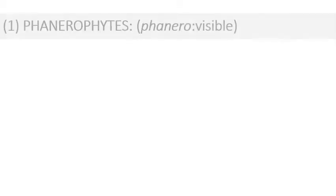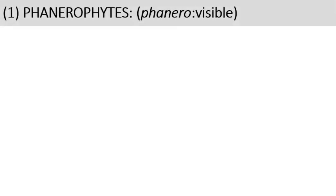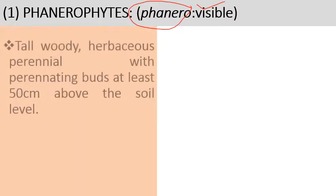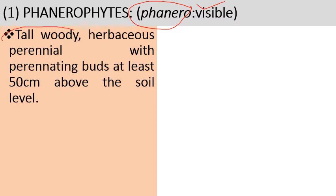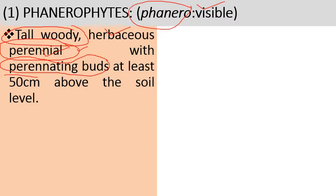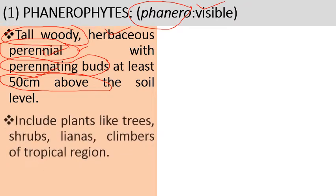The first type of life forms are Phanerophytes. 'Phanero' means visible. These are structures which help in overcoming tough conditions — the buds and shoot tips. In the case of Phanerophytes, they are tall woody or herbaceous perennials that complete their life cycle in more than two successive years, with perennating buds present at least 50 centimeters above the soil surface.